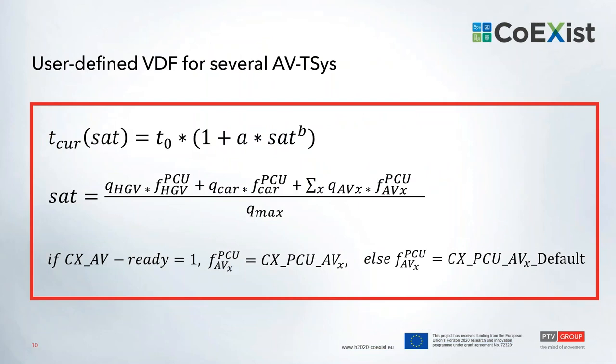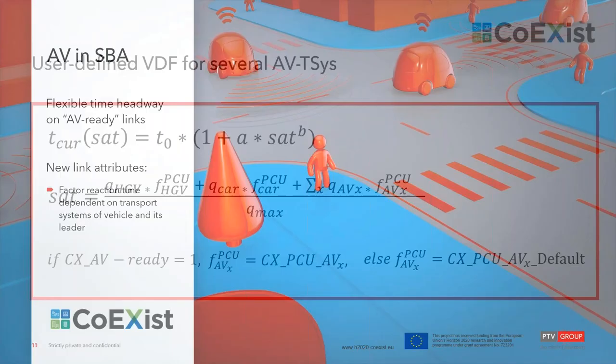Before moving to the simulation-based assignment, here we see the volume delay functions — a BPR function. The parameters A and B are defined in the dialog, and we also see the calculation of saturation. In this particular user-defined volume delay function, we can have multiple transport systems: ATVs, conventional cars, and several AV transport systems. We also define that if the link is AV-ready, the PCU factor defined at the link via the user-defined attribute is used; if the link is not AV-ready, the default from the transport system is used.